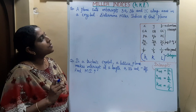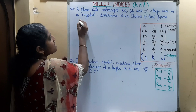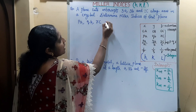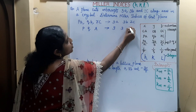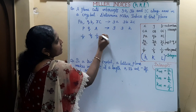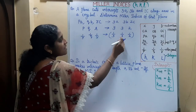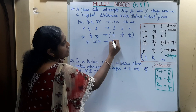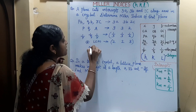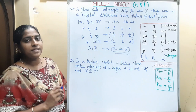Problem: A plane cuts intercepts 3A, 3B, and 2C along the axes in a crystal. Determine the Miller indices. The coefficients P, Q, R are 3, 3, 2. Taking the reciprocal: 1/3, 1/3, 1/2. These are fractions, so multiply by the LCM = 6: 6×(1/3) = 2, 6×(1/3) = 2, 6×(1/2) = 3. The Miller indices are (2, 2, 3).